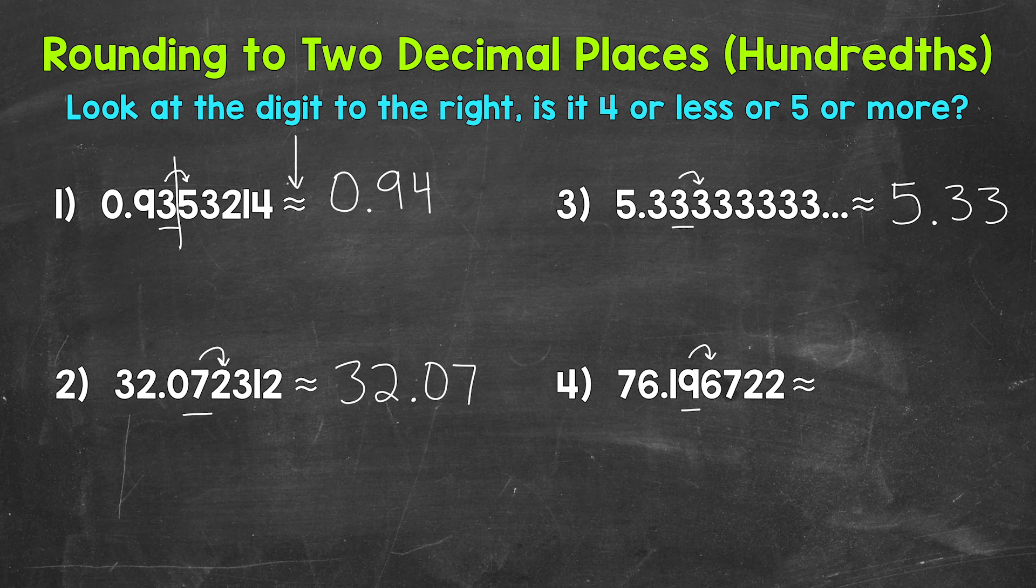So what we can do, we can put a zero in the place we are rounding and then regroup the one from the ten to the next place to the left. So we have one and then another one. That gives us two in the hundredths. Bring our decimal down.